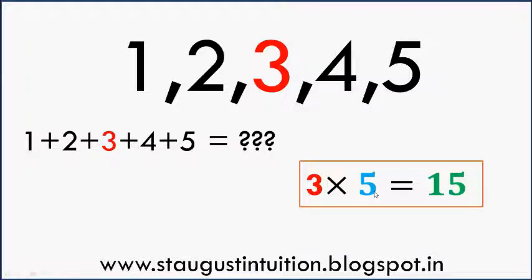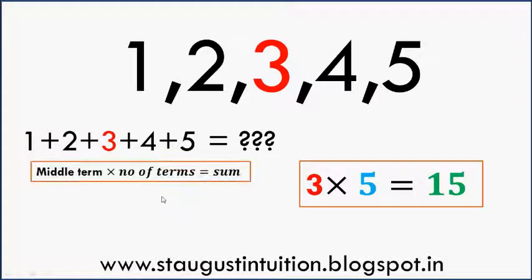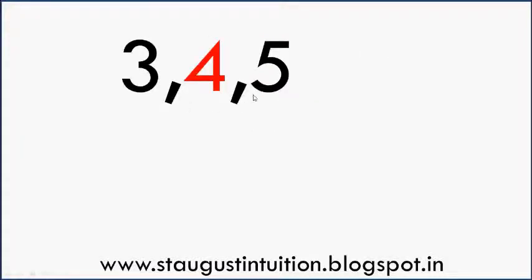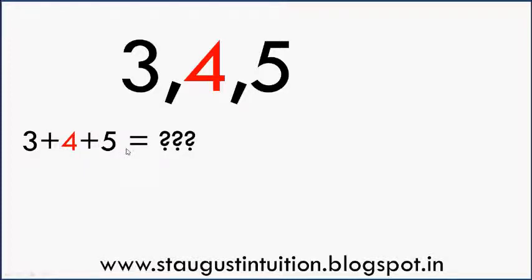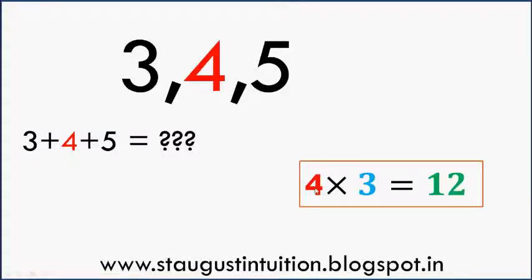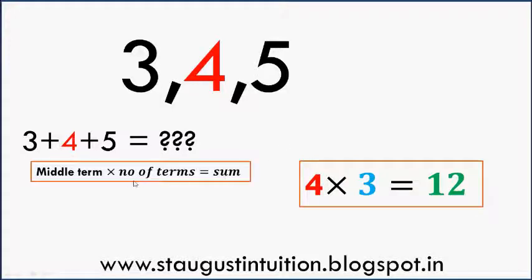Now we add: 3 plus 4 plus 5 plus 3 plus 4 plus 5 plus 3 plus 7 plus 7 plus 8 plus 8. This is the middle term. 4 is the term. When you add the terms, how much is 10? It's 10. When we read the term — middle term plus number of terms.